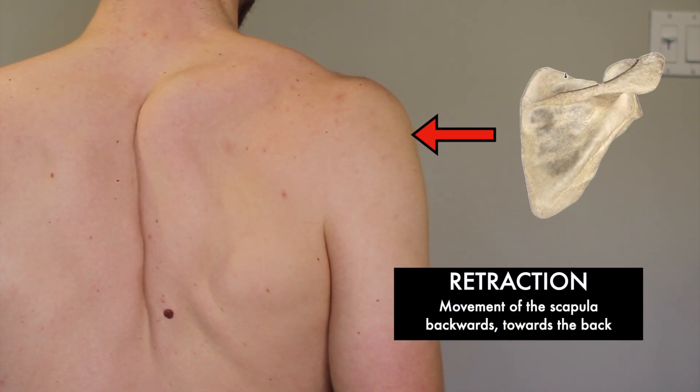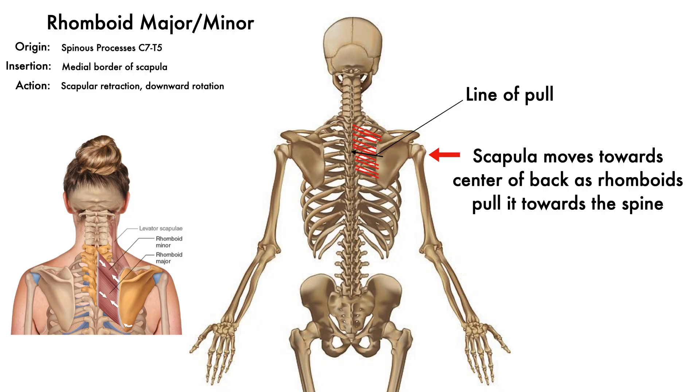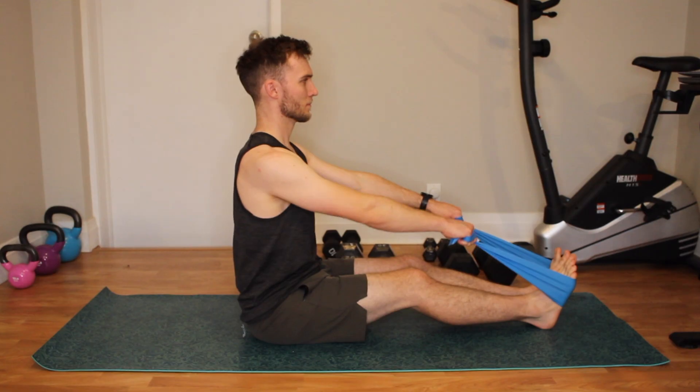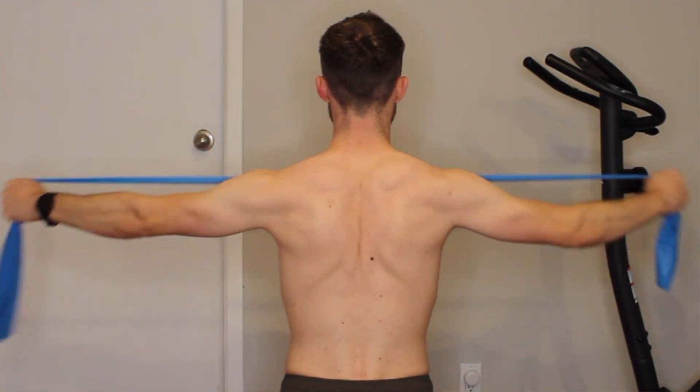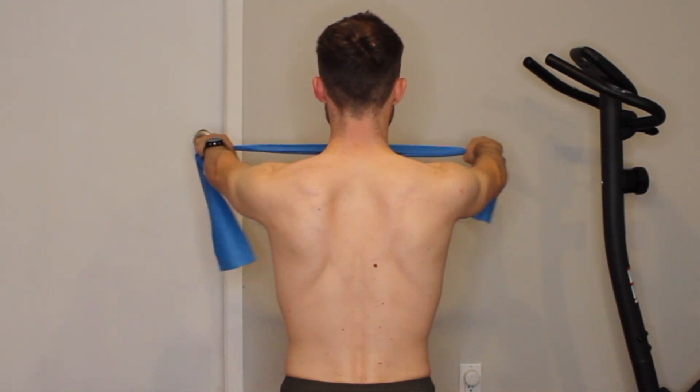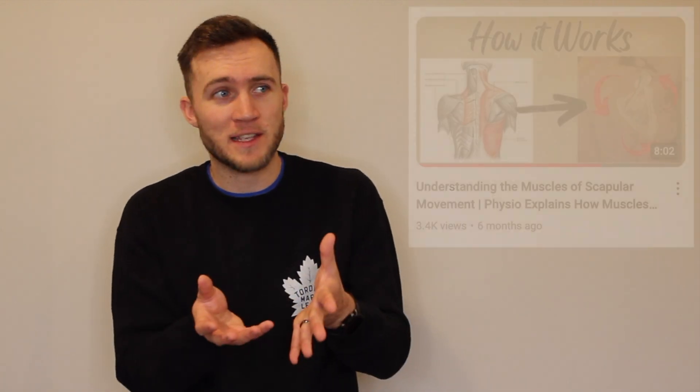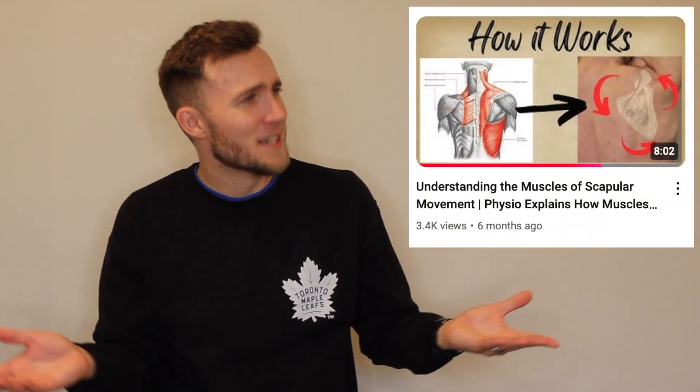First, we discussed how the shoulder blade moves, then we went into the muscles that make those movements happen, and today is exercise examples for those muscles and movements of the scapula. Hopefully this will tie it all together with a beautiful little bow that is in no way months and months behind schedule. I don't even know why you would say that or bring that up at all.